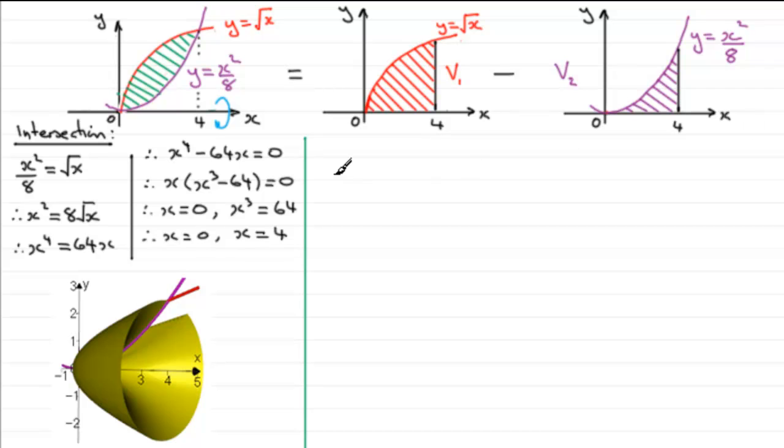Well for the volume v1, it's equal to pi times the integral of y squared integrated with respect to x. And we're dealing with integrating with respect to x so we need limits with respect to x and that's going to be going from 0 to 4. And for this one if we square our y we're just going to have x so we've got pi times the integral of x with respect to x going between 0 and 4.